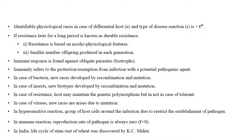In the case of bacteria, new races are developed by recombination and mutation. In the case of resistance, the host may maintain genetic polymorphism, but this is not the case for tolerance. In the case of viruses, new races arise due to mutation.